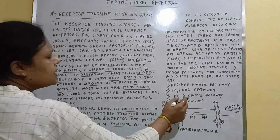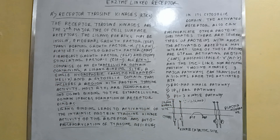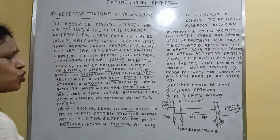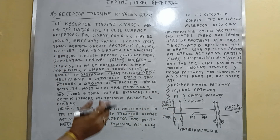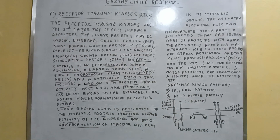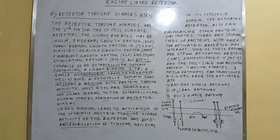The actual mechanism is as follows: the ligand first binds to the receptor. Before binding, the receptors remain as monomers. When the ligand binds, they come together as a dimer. After ligand binding, the receptor becomes active and undergoes autophosphorylation.